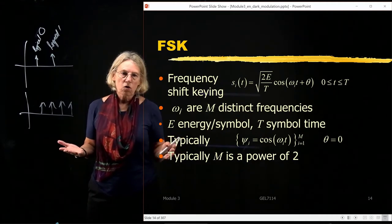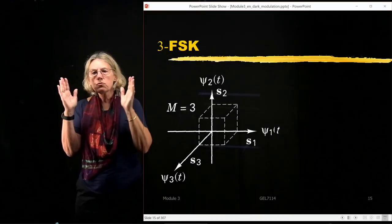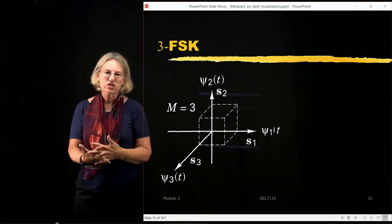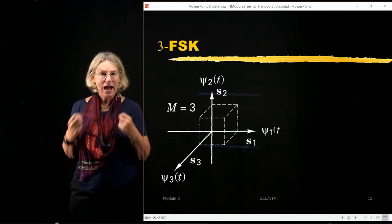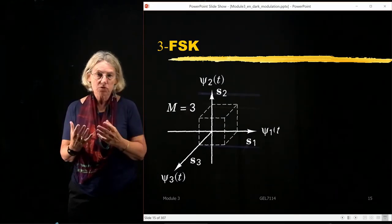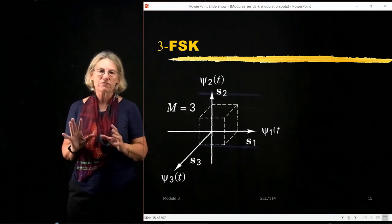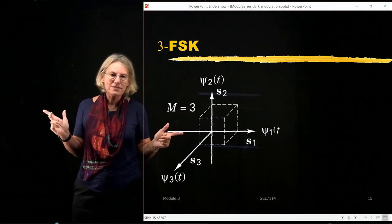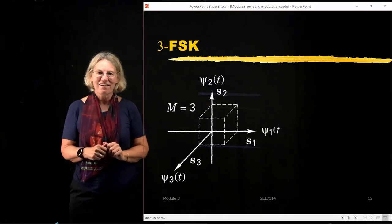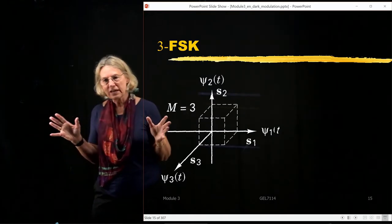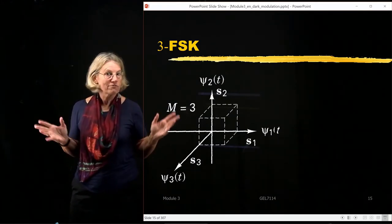For the signal space representation of FSK, it gets very complicated because it is no longer a two-dimensional space. If I have M symbols in the constellation, I have M basis vectors — so it becomes an M-dimensional space. In this M-dimensional space, it's hard to draw. I'll take 3FSK because it's three-dimensional, our intuition is clear on three-dimensional space, and it's easier to draw than four dimensions.